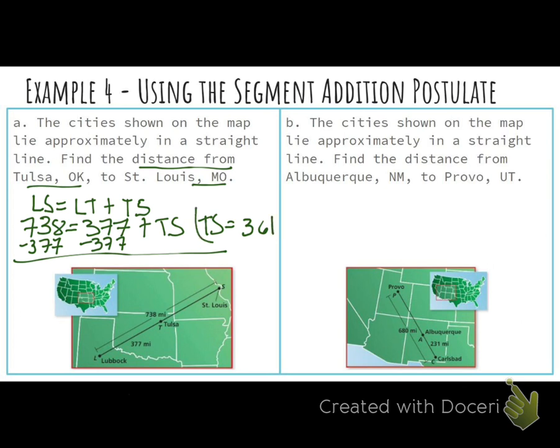Your computer program might make you guys say something like miles. So just be aware of that. Nice work, guys. You guys are doing a really good job on this section. Our last example here. Remember, the cities shown on the map lie approximately in a straight line. Find the distance from Albuquerque, New Mexico to Provo, Utah. So who would like to create our first line? PC. PC. Then what comes next? PA. PA. AC. AC. Nice work.